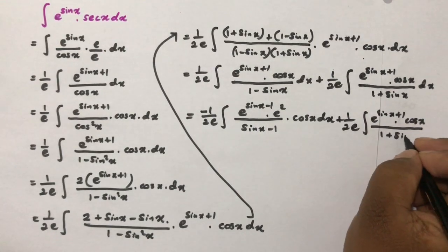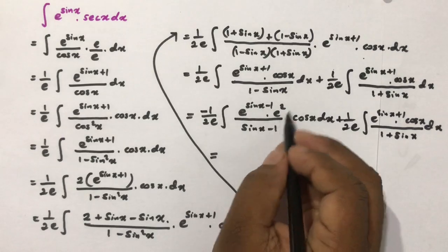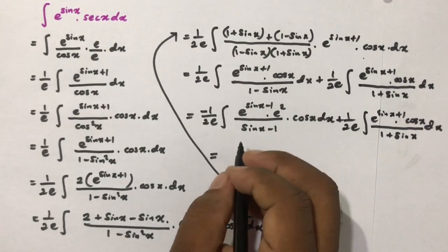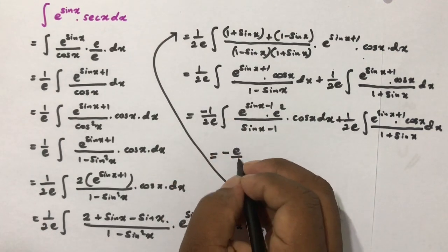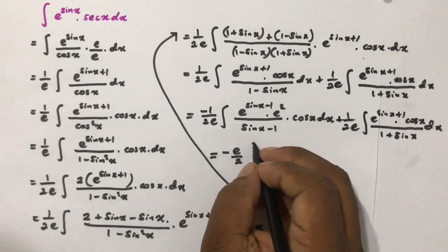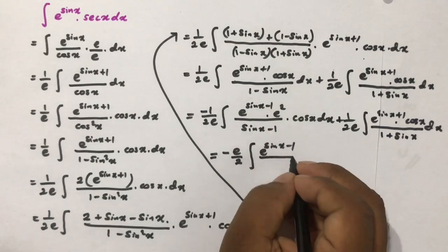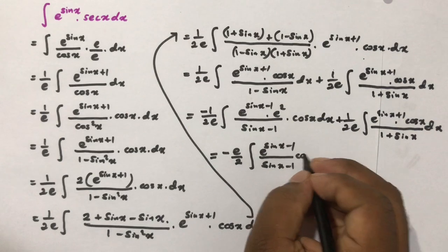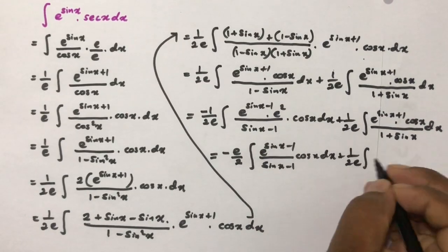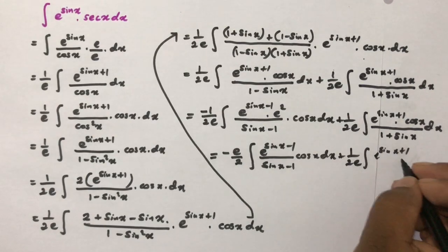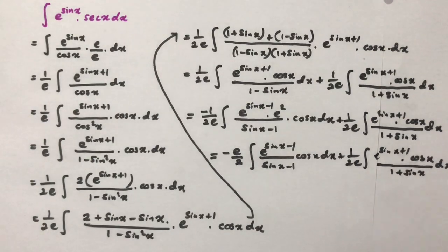Taking e squared outside the integral sign: e cancels partially, giving minus e over 2 times the integral of e to the sine of x minus 1 over sine of x minus 1 times cosine of x dx, plus 1 over 2 times e times the integral of e to the sine of x plus 1 times cosine of x over 1 plus sine of x dx.